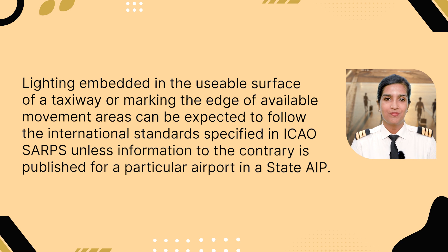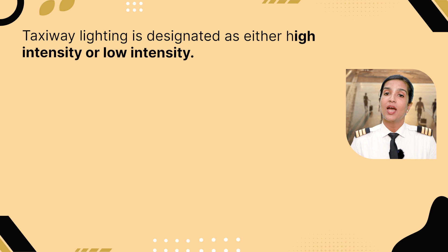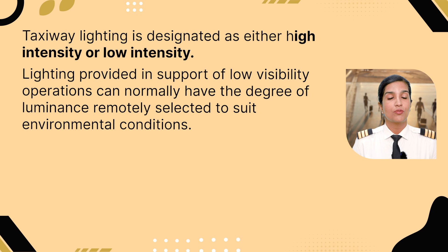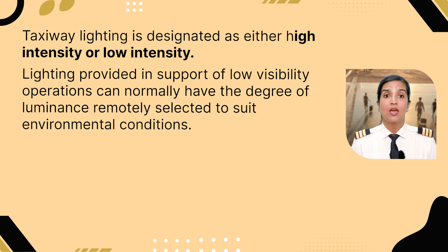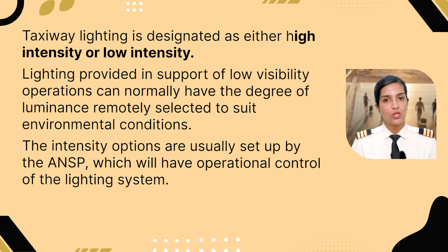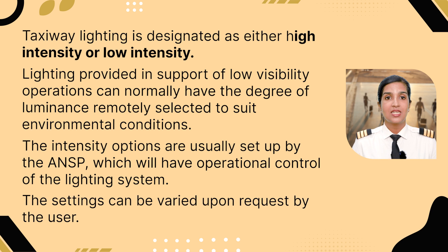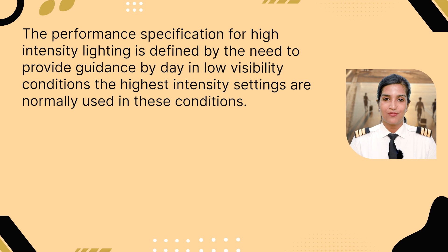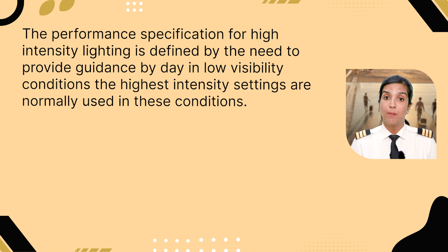Taxiway lighting is designated as either High Intensity or Low Intensity. Lighting provided in support of low visibility operations can normally have the degree of luminance remotely selected to suit environmental conditions. The intensity options are usually set up by the ANSP, which will have operational control of the lighting system. The settings can be varied upon request by the user.